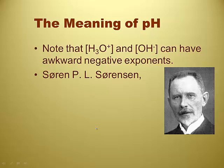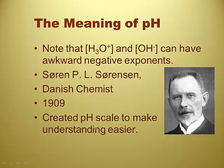Like we just said, hydronium and hydroxide, those negative exponents are a bit awkward. And it took this gentleman by the name of Soren Sorensen, about 1910, almost 100 years ago, actually a little bit more than 100 years ago now, he created a pH scale to make understanding acids and bases easier.